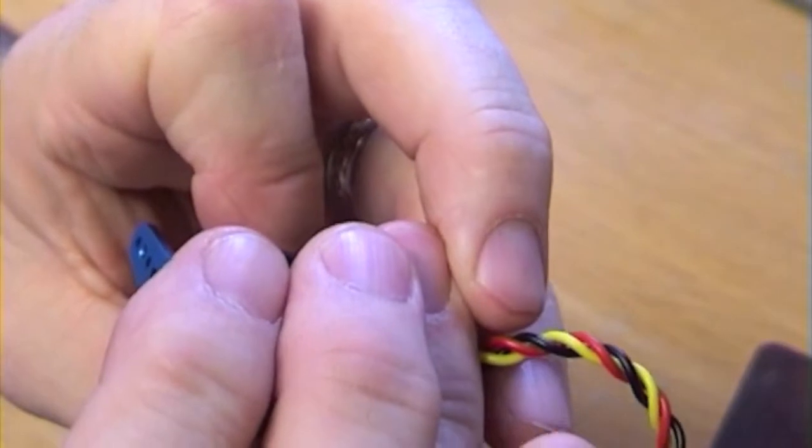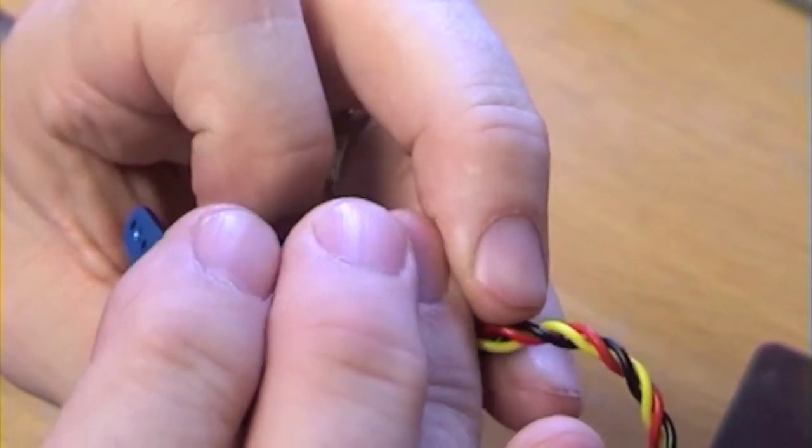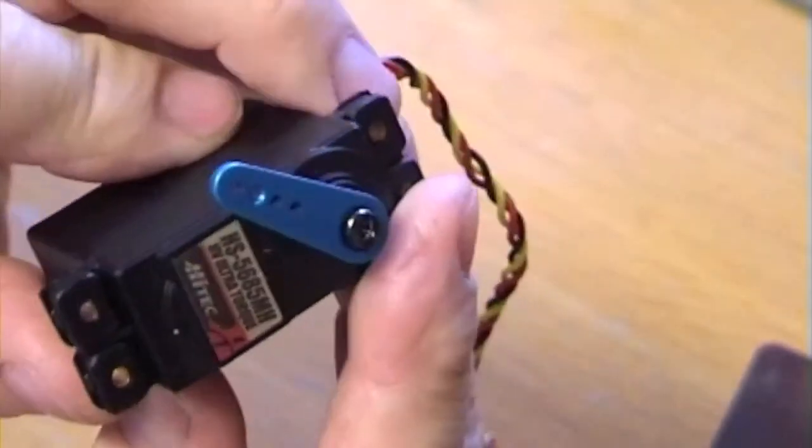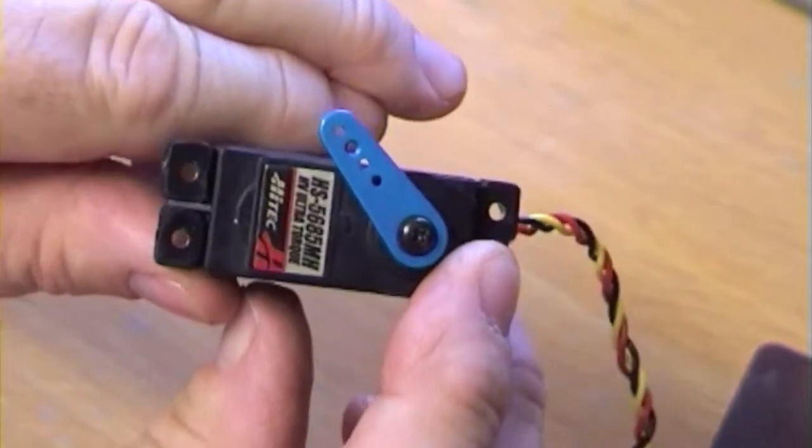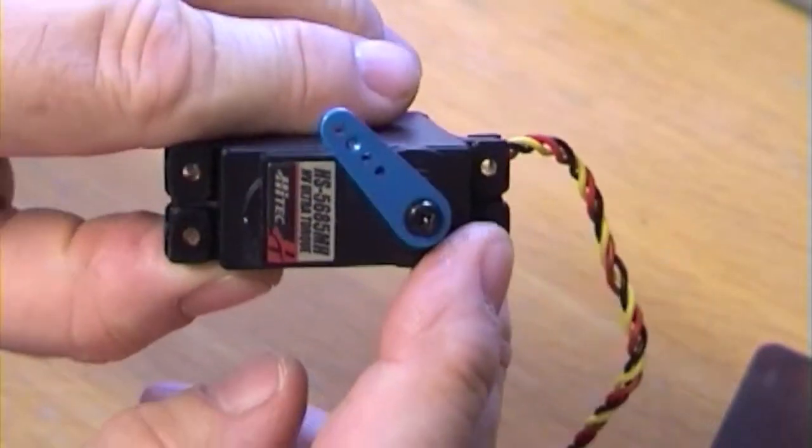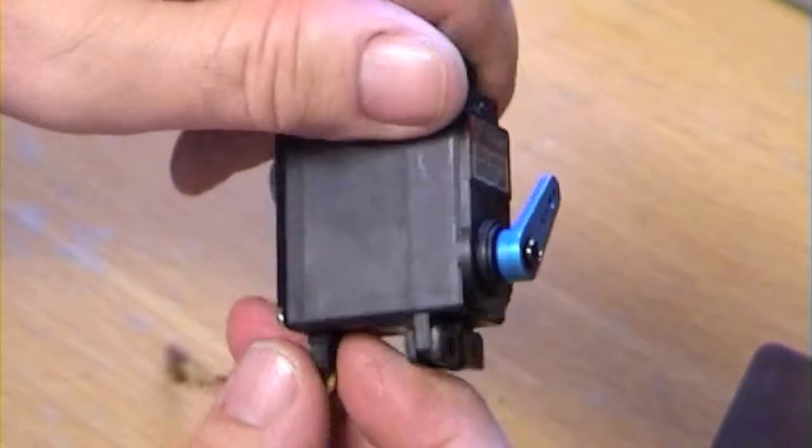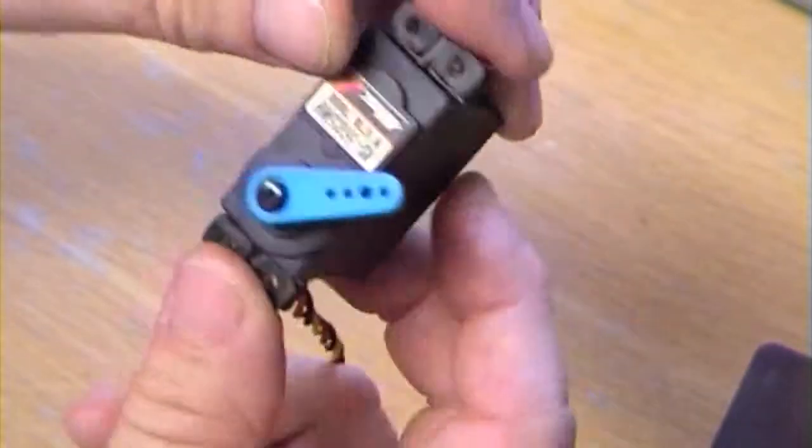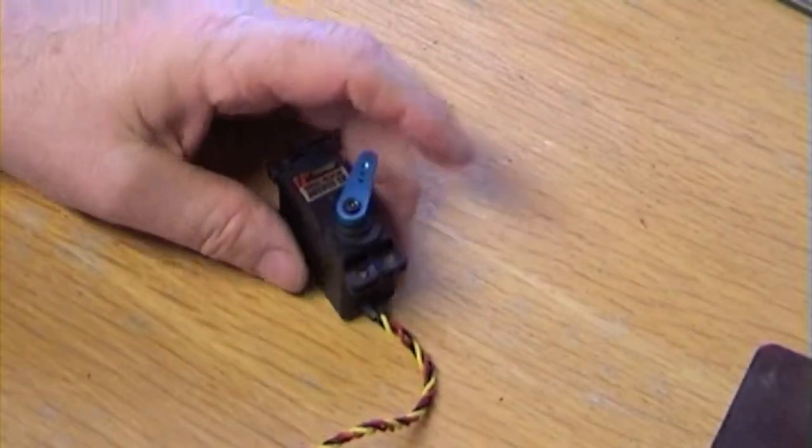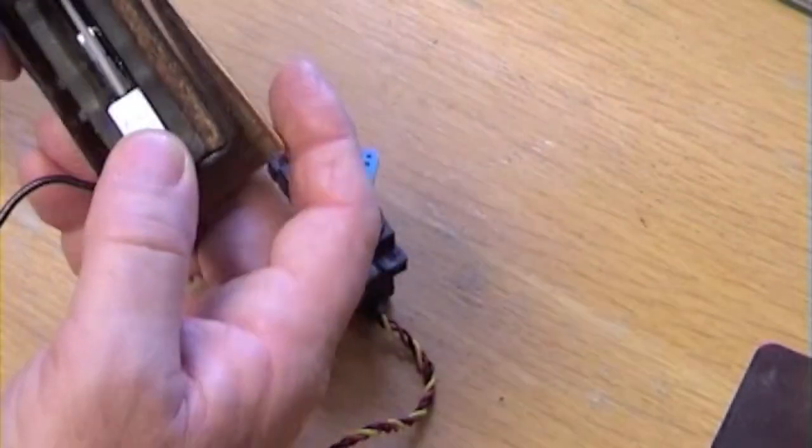So, HS5685MH, ultra high torque, made by Hitec. I'll put a link in the description if you're interested in something like that. It's really good for anything, quite a powerful little servo. And that, with the engine cutoff.